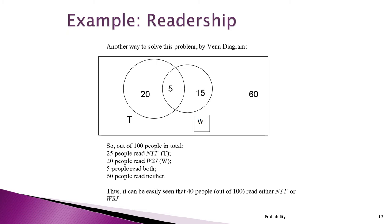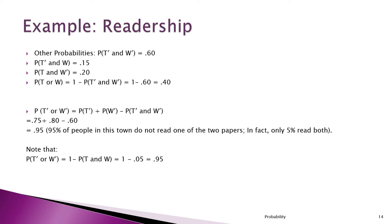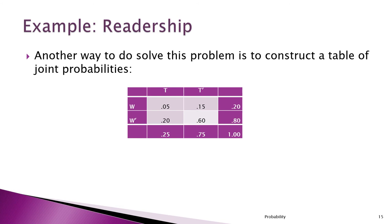Sometimes your homework probability problems will ask for various different types of probabilities — here you have examples of some of the different types of questions you could be asked. Another way to look at these problems is to put them into a table of joint probabilities. We'll see more of this later on — it's just to show you this is an alternate way, and in some problems it's actually a much better approach.